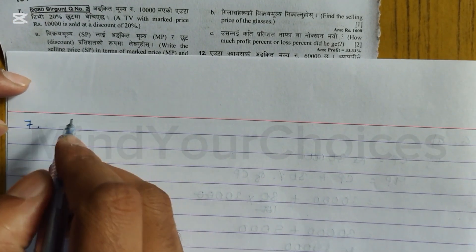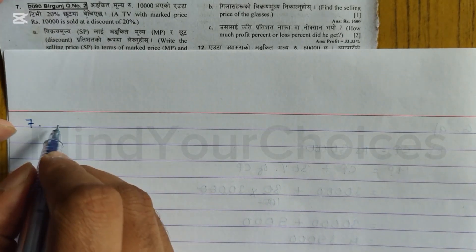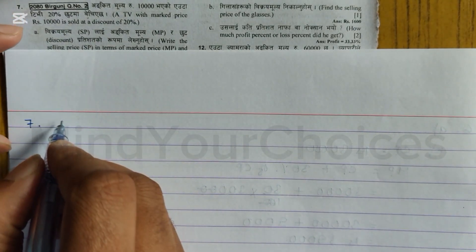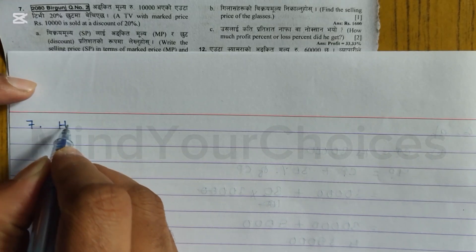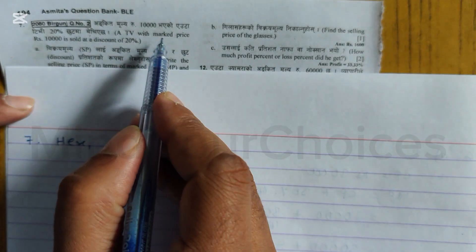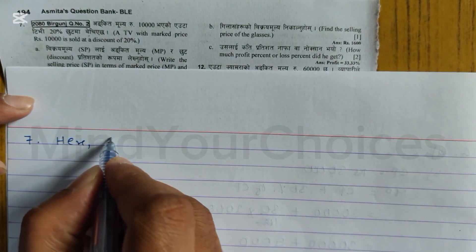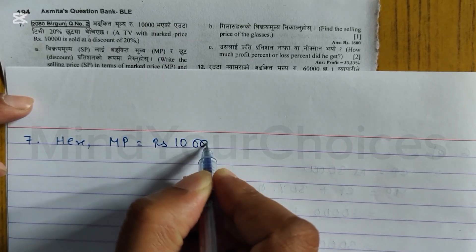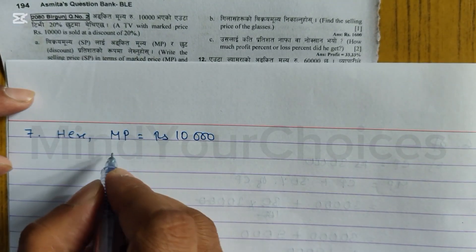Question number 7 - I provided the formula at the start, then we did question 1, 2, 3 and so on. Here you can see mark price is Rs 10,000, so MP equals Rs 10,000. Discount is 20%, so discount percent equals 20%.